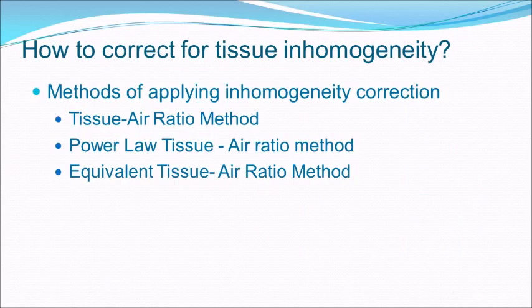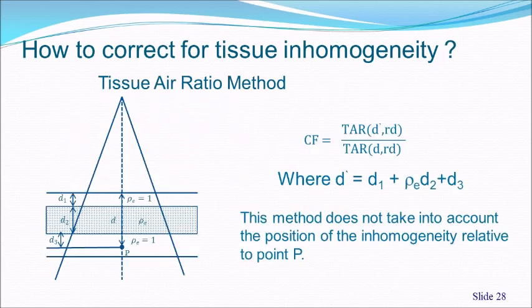The previous data were calculated using the advanced ACROS-XB algorithm. Advanced algorithms will be discussed in detail in an advanced-level course on external beam radiotherapy. There were three original methods proposed for inhomogeneity correction based on tissue air ratio: the tissue air ratio method, the power law tissue air ratio method, and the equivalent tissue air ratio method.